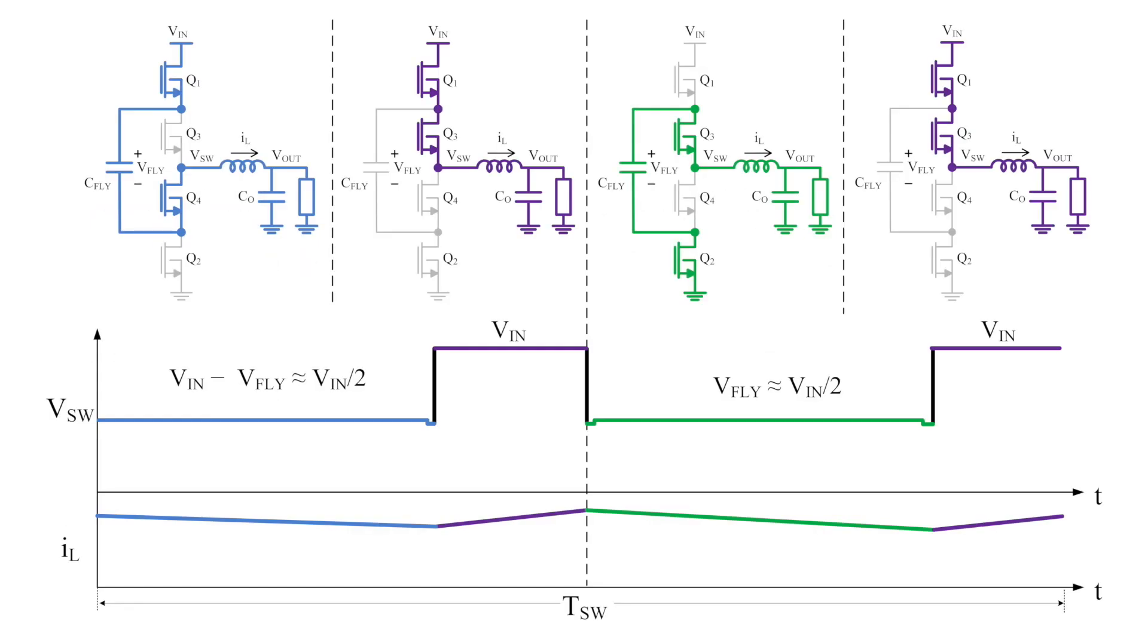As the input voltage continues to decrease, the controller continues to increase the duty cycle until Q1 and Q3 are turned on during the same time period. In this case, the switch node starts alternating between VIN and VIN over two. Again, there's always a stage where the flying capacitor is charged and one where it is discharged.